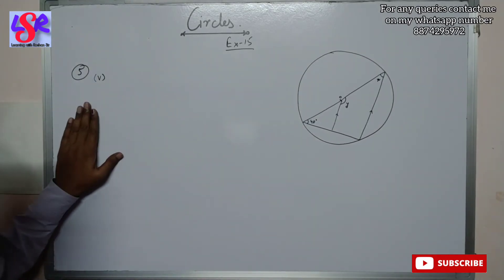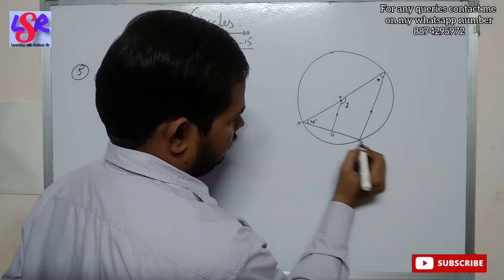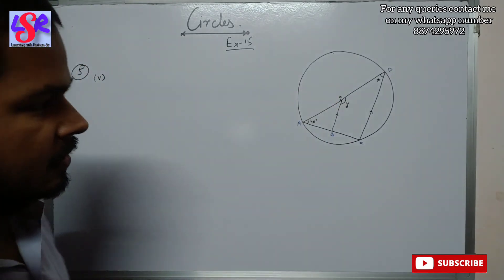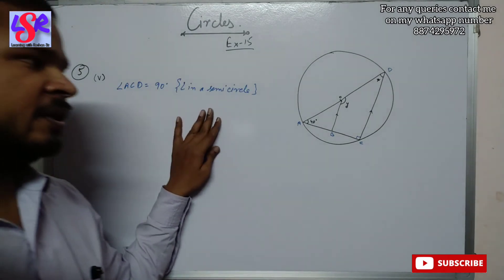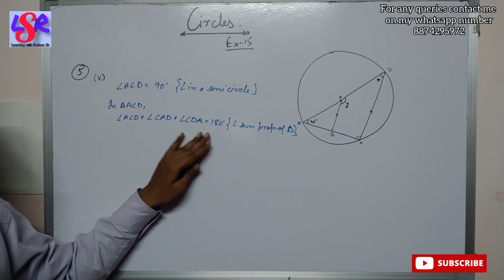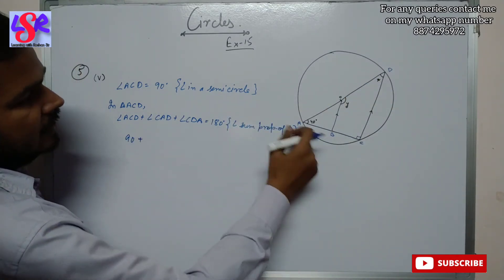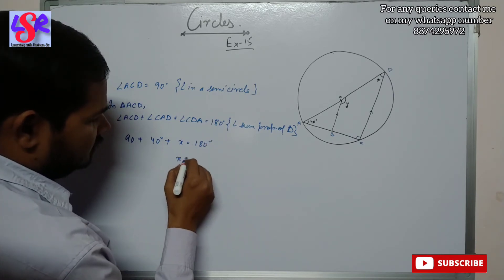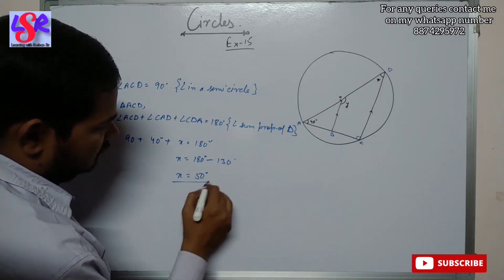Question 5 fifth part. We name the points A, B, C and D. O is the center of the circle, so AD is the diameter and angle ACD equals 90 degrees as angle in a semicircle. In triangle ACD, angle ACD plus angle CAD plus angle CDA equals 180 degrees. So 90 plus 40 plus X equals 180, giving X equals 50 degrees.